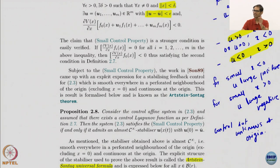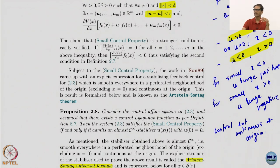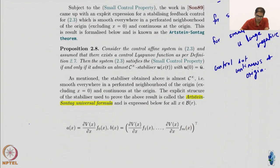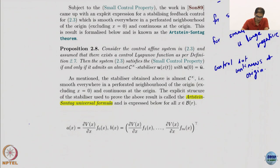For systems like x_dot = x + x²u with no small control property, no continuous stabilizer at the origin exists, which is consistent with the tight result. This is also intuitive: control naturally flips direction at the equilibrium - if you are on one side you push one way, other side the other way. So the Artstein-Sontag formula gives you a way of constructing an almost C-infinity stabilizer: smooth everywhere but at the origin, where it is continuous.